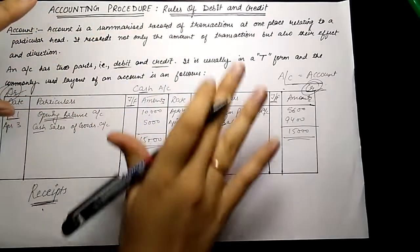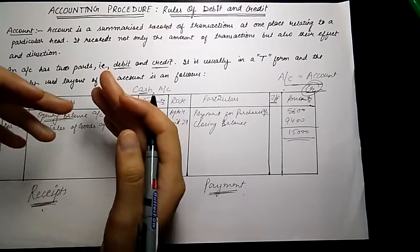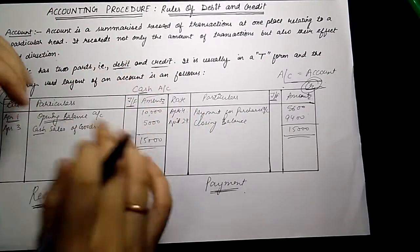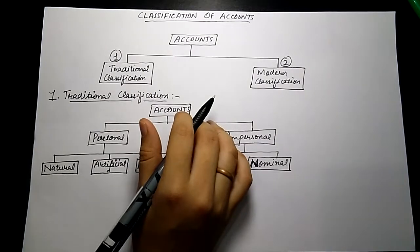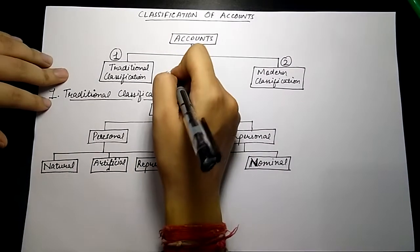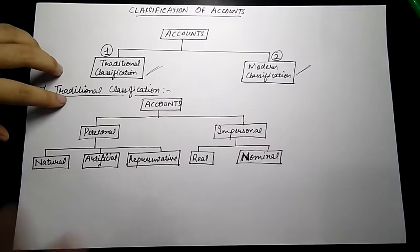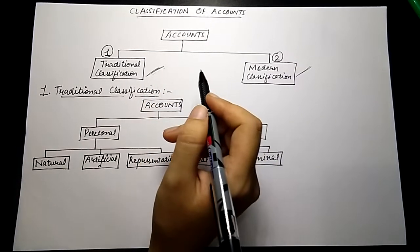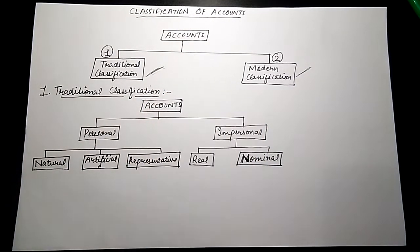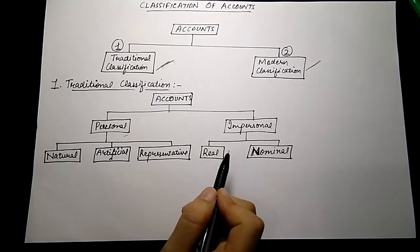The crux of what we are doing is debit and credit — what we will debit and what we will credit. To learn that, we first classify our accounts, and we can do it with two approaches: one is traditional classification and the other is modern classification. According to traditional classification, we divide our accounts into two parts: one is personal and the other is impersonal account.